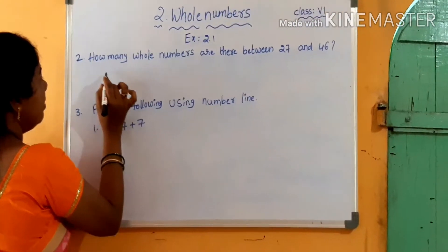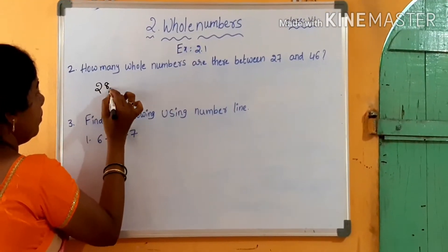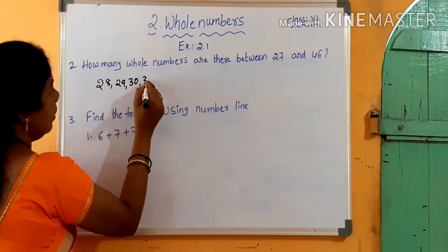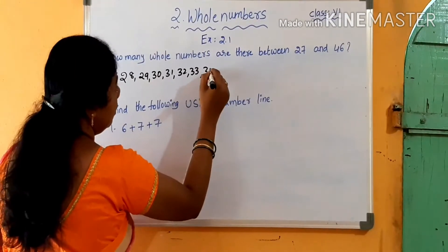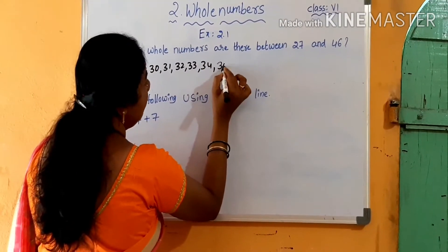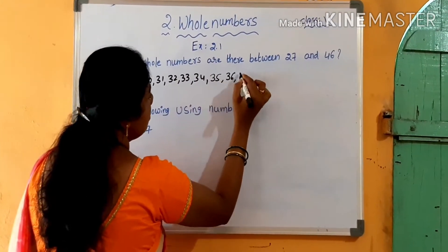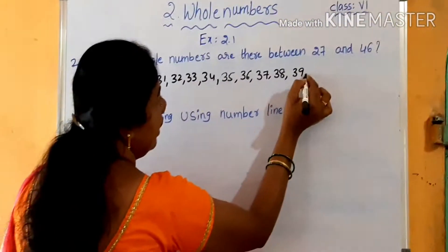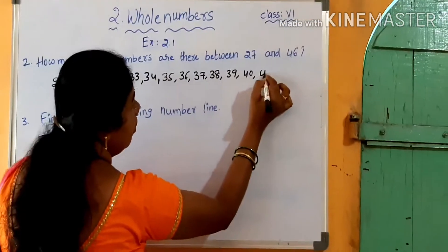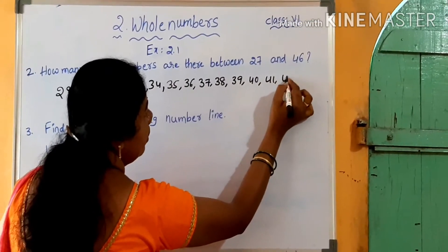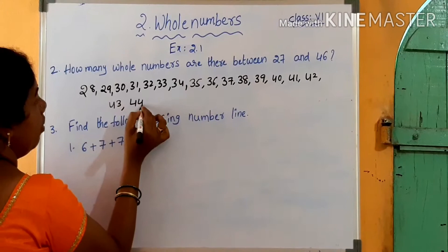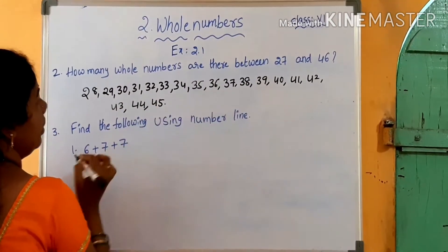So: 28, 29, 30, 31, 32, 33, 34, 35, 36, 37, 38, 39, 40, 41, 42, 43, 44, and 45.